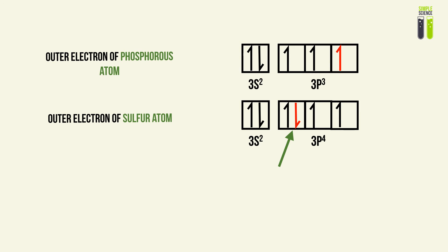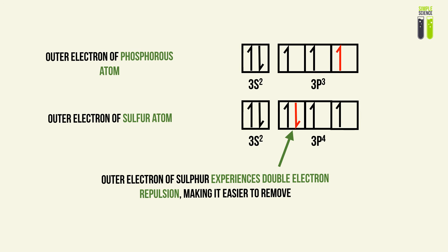Looking at it, we will recognize that this electron experiences electron repulsion with the other electron within its subshell. Compared to the phosphorus atom, the outermost electron of sulfur has a paired electron and therefore has double electron repulsion. This causes it to be easier to remove.